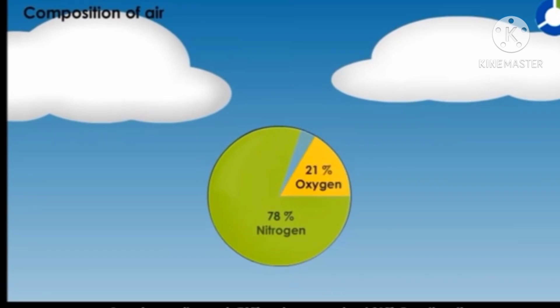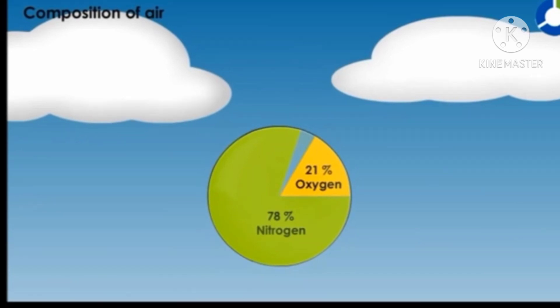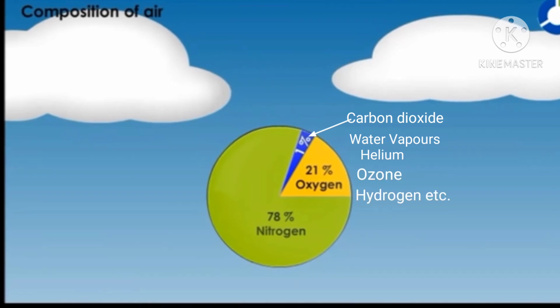After nitrogen, oxygen is present at nearly 21%, and 1% there are other gases like carbon dioxide, water vapors, helium, ozone, hydrogen, etc. Inhi gases se milke air bani hai. Nitrogen 78%, oxygen 21%, and 1% other gases.